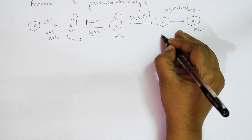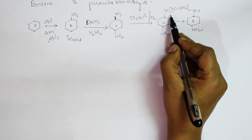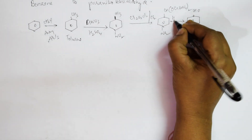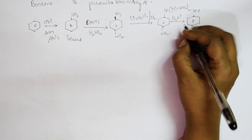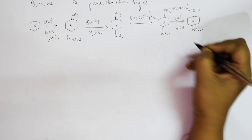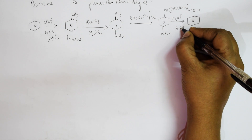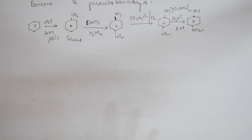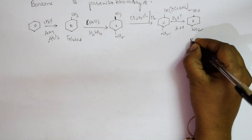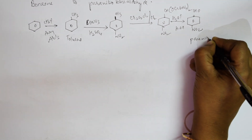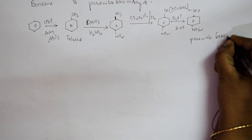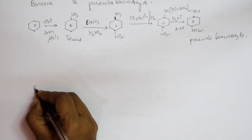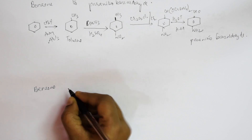To get the final CHO group, add H3O+ or HOH (acidification). This releases the aldehyde and gives para-nitrobenzaldehyde. The conversion from benzene to para-nitrobenzaldehyde is complete.